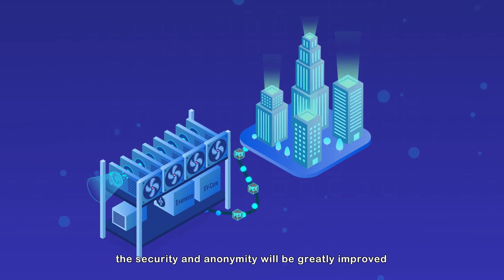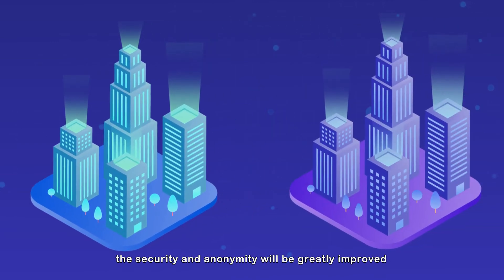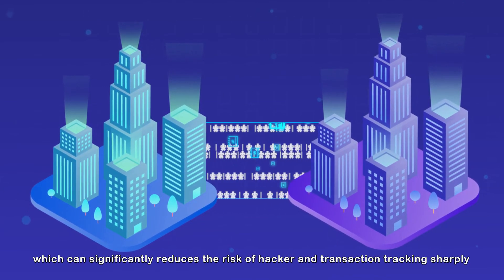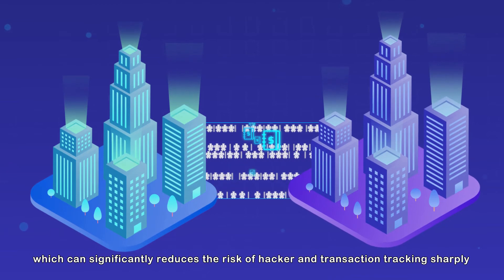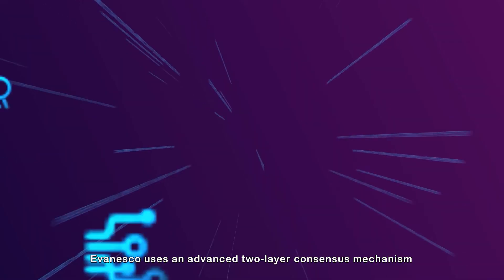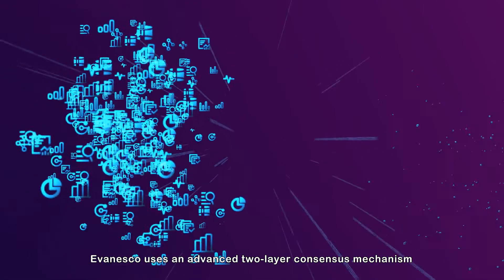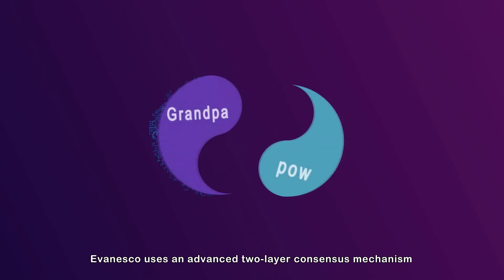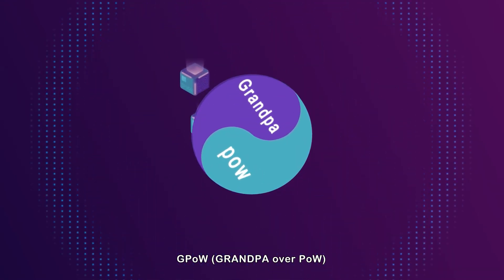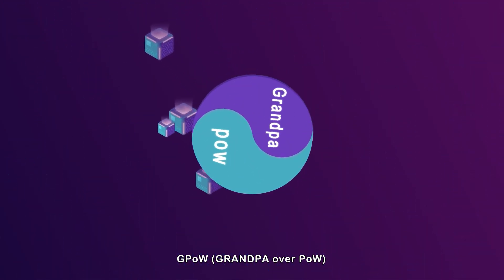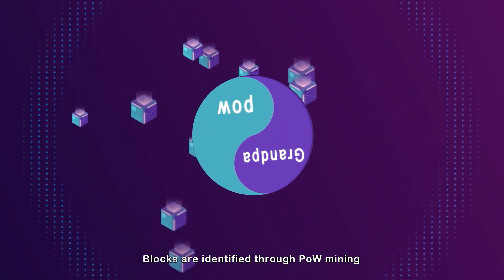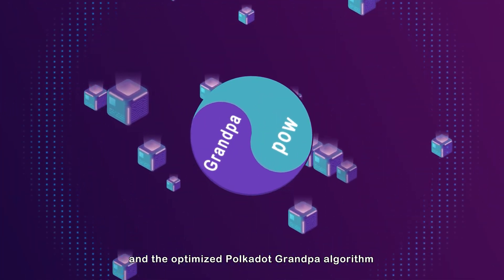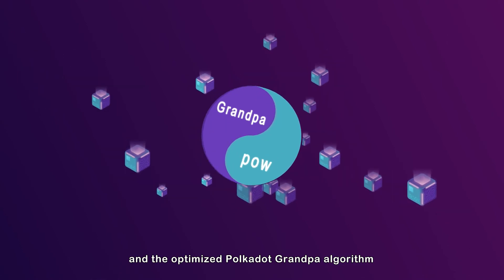The security and anonymity will be greatly improved, which can significantly reduce the risk of hacker attacks and transaction tracking. Evanesco uses an advanced two-layer consensus mechanism, GPOW — GRANDPAR over POW — where blocks are identified through POW mining and the optimized Polkadot GRANDPAR algorithm.